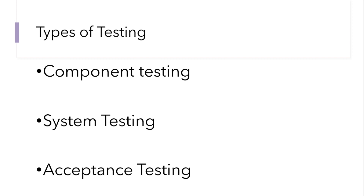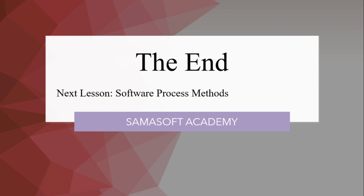The last type is acceptance testing. This is where we give the tested system to the user to also test. For example, we can give the system to the user and say: use the system for about three months to see if everything works as you want. That is acceptance testing. In our next lesson we'll be looking at software process methods. Please subscribe to this channel if you haven't already. Thank you for joining this lesson.